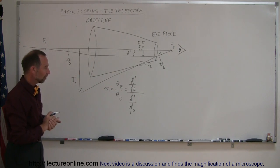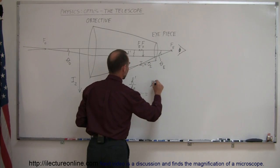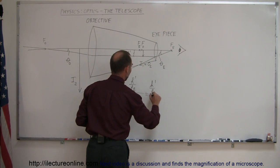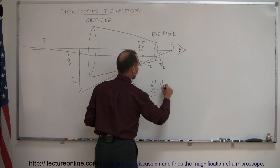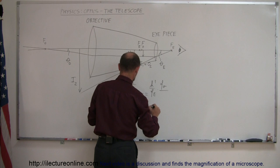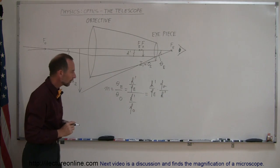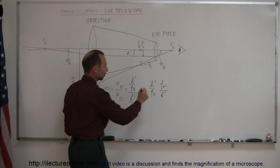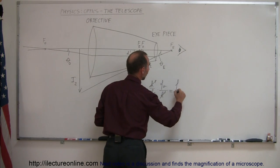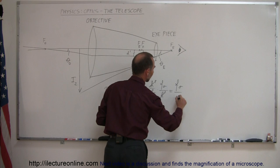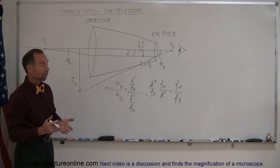Now we have two fractions divided by one another, so this can be written as a product of h prime over f sub e times the inverse of the second fraction, which is f sub o over h prime. The h prime terms cancel out, and you can see that the result is simply the ratio of the focal length of the objective lens divided by the focal length of the eyepiece — that is the magnification of any telescope.